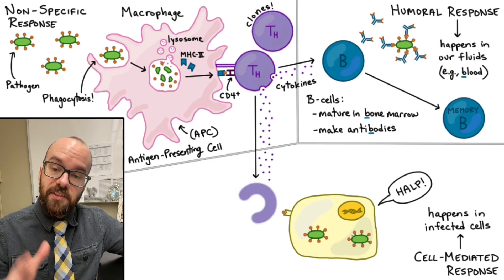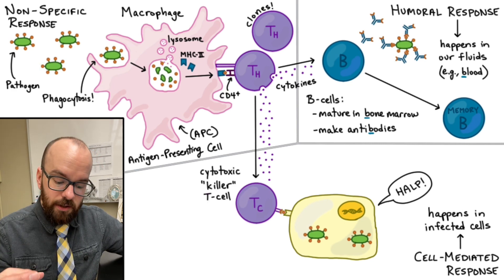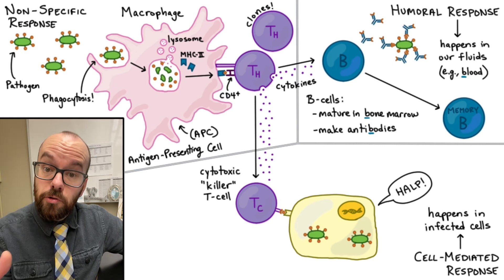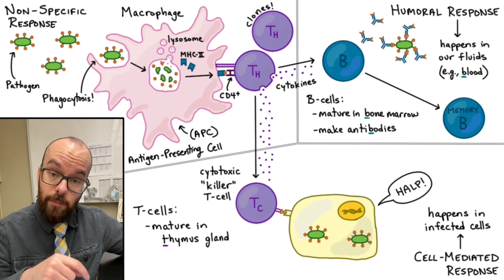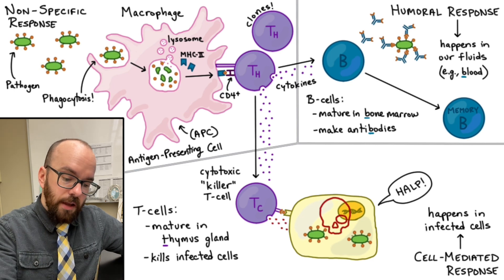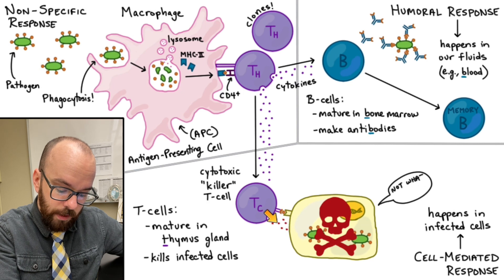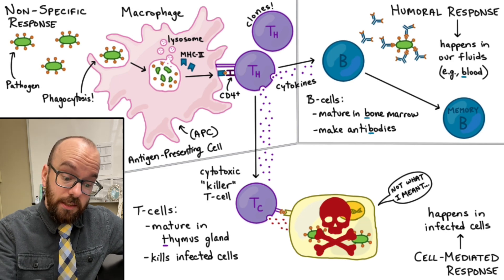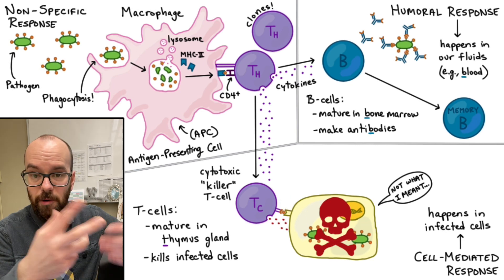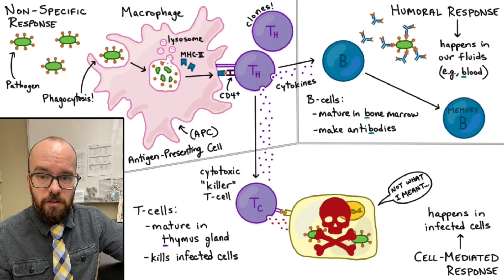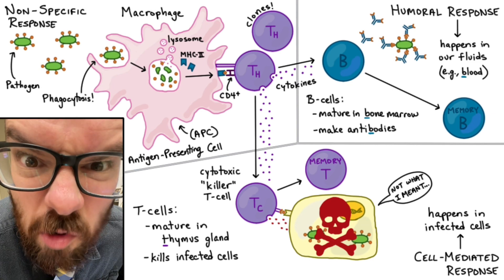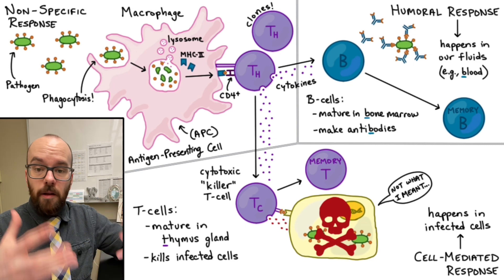T helper cells release cytokines that stimulate cytotoxic T cells into action. Cytotoxic T cells detect antigens presented on the surface of infected cells — that's how they identify cells that need to be neutralized. T cells mature in the thymus gland, which is where they get the name T cell, and what they do is kill infected cells. They release specialized chemicals called perforins, which break open the cell membrane, along with enzymes that destroy the infected cell. It's a tragic ending for that cell but a happy ending for us. Some of those T cells stick around as memory T cells, ready to fight that pathogen in the future.